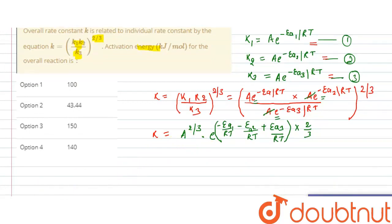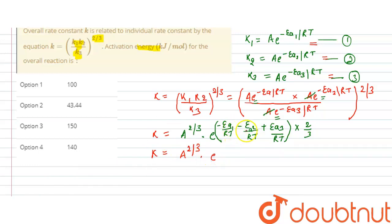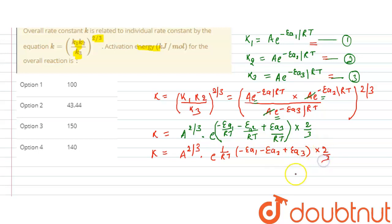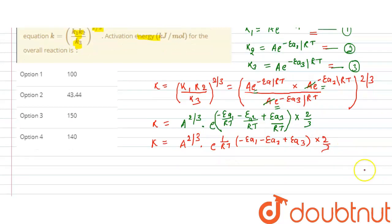Finally, k equals A^(2/3) times e to the power of (1/RT) multiplied by (−Ea1 − Ea2 + Ea3), with the whole expression multiplied by 2/3. Taking 1/RT out as a common factor, we write: k = A^(2/3) · e^[(−Ea1 − Ea2 + Ea3) · (2/3) / RT].